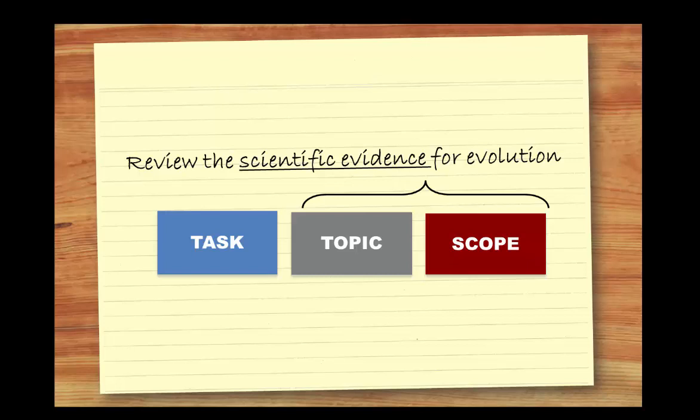Together, the topic and scope give important clues about how much you have to do and in what depth. Note that the question specifically asks you to review the scientific evidence on the subject, not just to write about evolution. You can see the scope puts limits on the topic of the assignment. Make sure you understand the scope of the project before you start researching and writing.